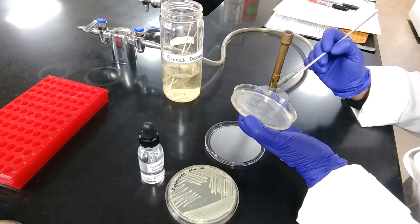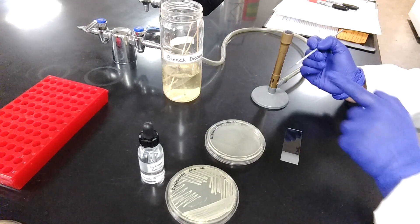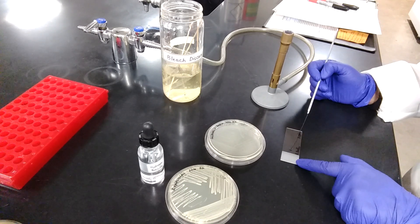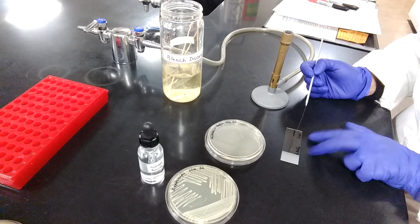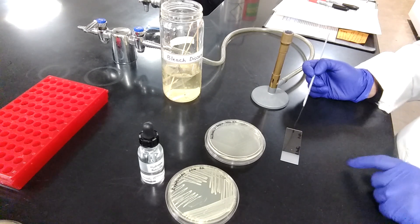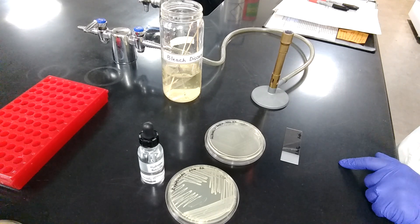Take the bacterial culture. You need a visible amount. Transfer a visible amount of the culture onto the glass slide. I have labeled the glass slide with the names of the bacteria on two sides. Transfer the visible amount of bacterial growth onto the slide.